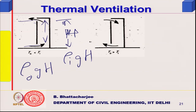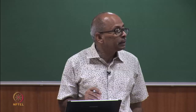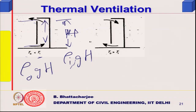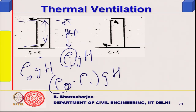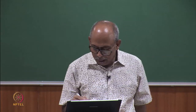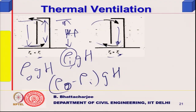If inside temperature is greater than outside, inside density is lower, so inside pressure is lower. The driving pressure is (rho-outside minus rho-inside) times g times H, pushing air inward at the bottom. If outside temperature is greater, density is higher outside and pressure inside is more, causing flow in the opposite direction — this is the stack effect.